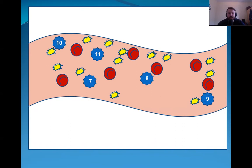These coagulation proteins are called factors. So we can see here factor 7, factor 8, factor 9, factor 10, and factor 11. For the purposes of this illustration, we have only shown these five specific factors. However, it's important to note that there are others.